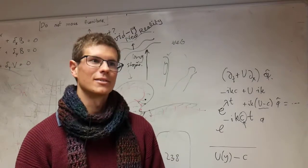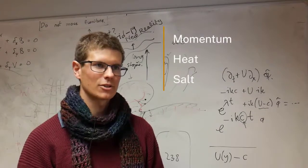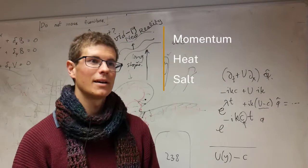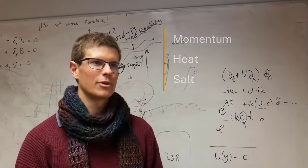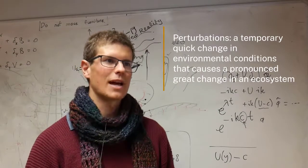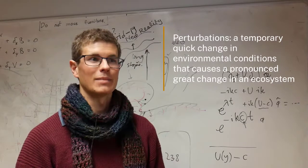Over longer timescales, we expect the three properties, momentum, heat and salt, to roughly balance each other between the ocean and the atmosphere. However, small timescale perturbations are possible if positive feedback loops amplify themselves, resulting in deviations from a mean state.